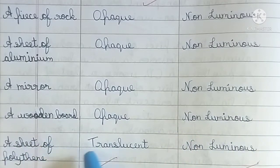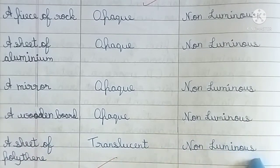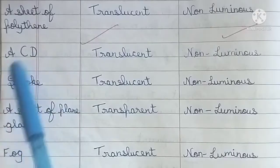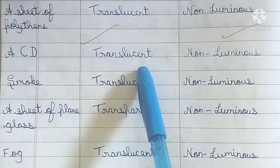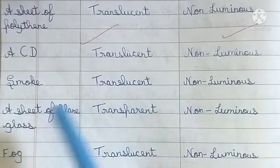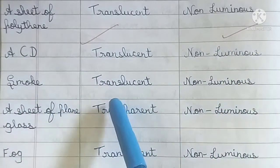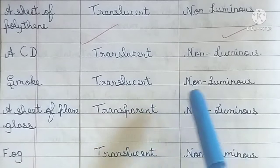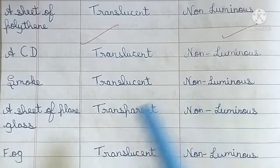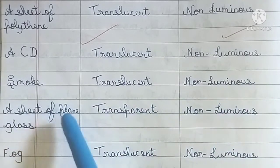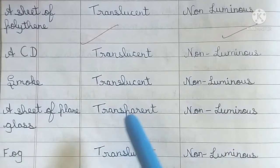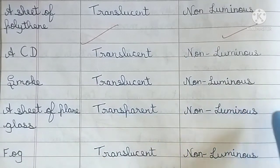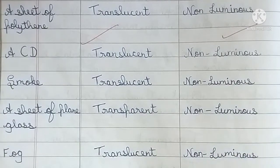A sheet of polythene: translucent, non-luminous. A seedy smoke: translucent, non-luminous. Smoke: translucent, non-luminous. A sheet of plain glass: transparent, non-luminous. Fog: translucent, non-luminous.